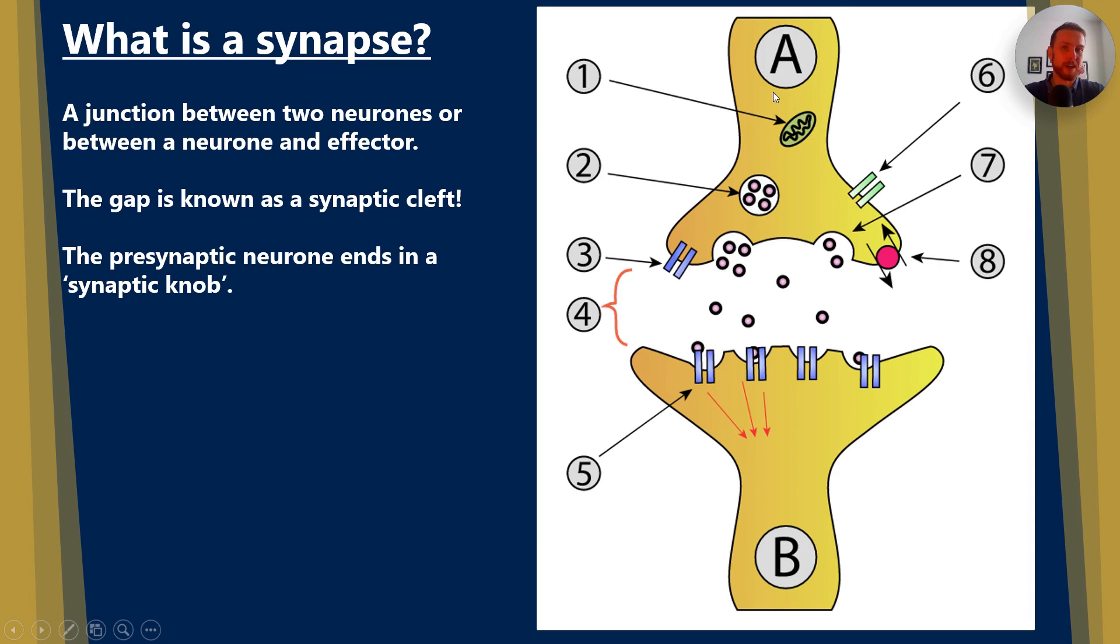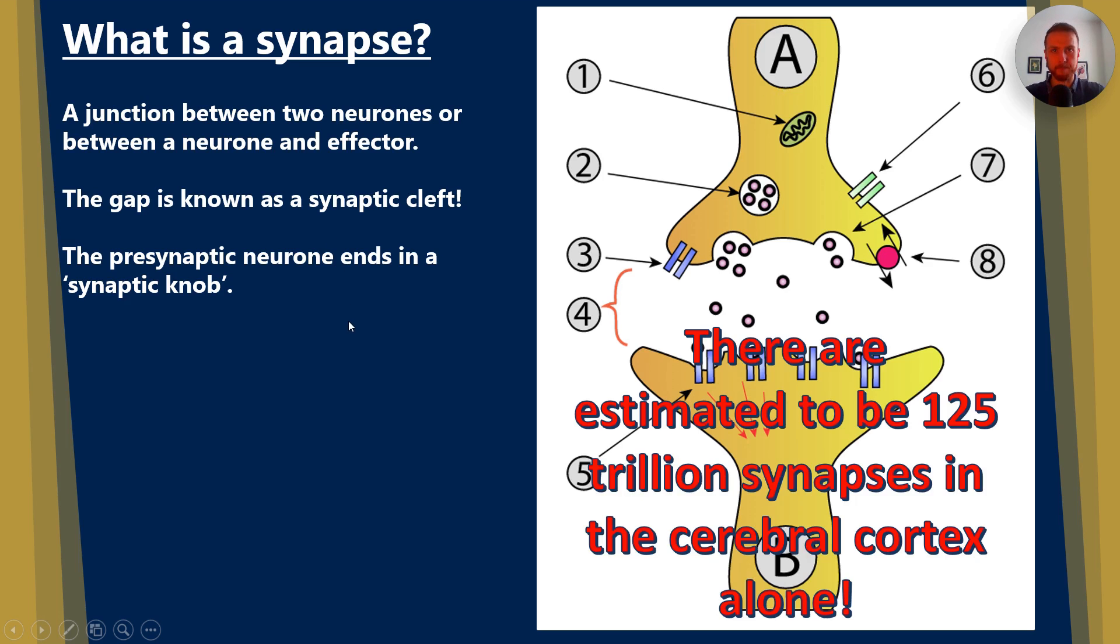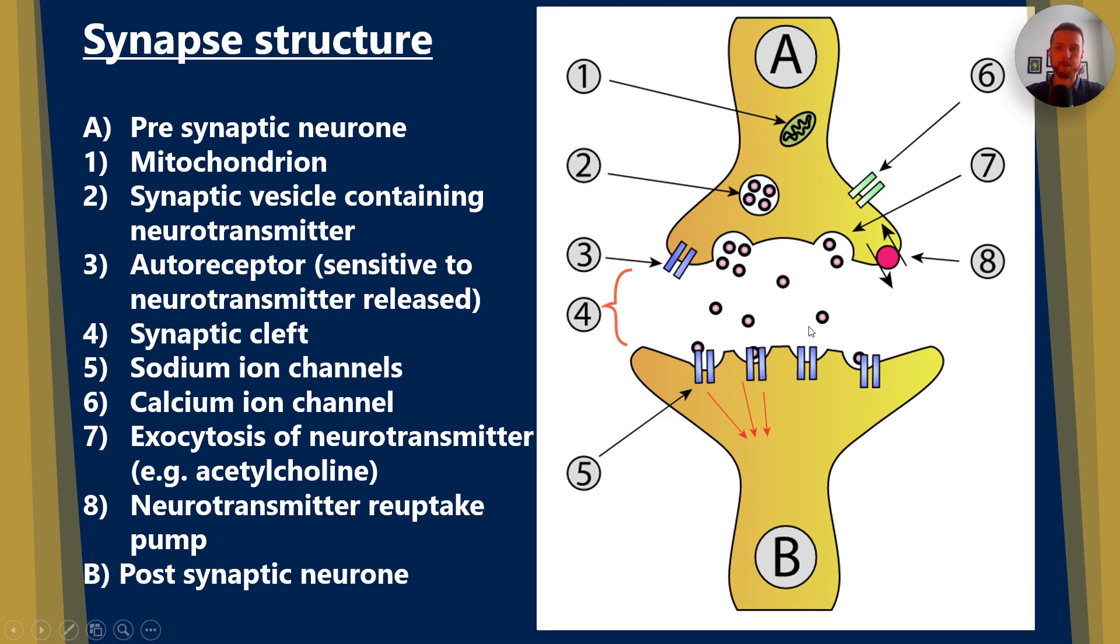Now the end of the presynaptic neuron terminates in a synaptic bulb or a synaptic knob. And there's estimated to be 125 trillion synapses in the cerebral cortex alone. I highly recommend you draw this diagram because we're going to label synaptic structure. So with A, we have the presynaptic neuron.